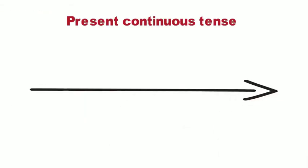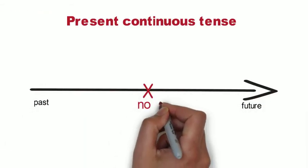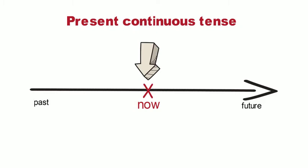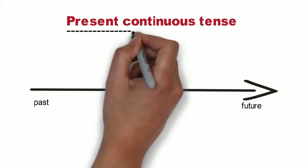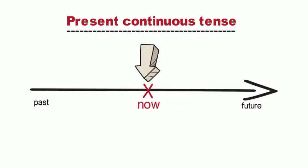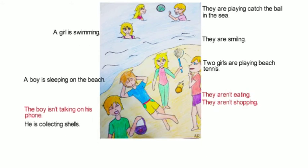When we want to talk about what someone or something is doing right now at the time of speaking, we use the present continuous tense. All of these sentences tell us what the children are doing now. They all use the present continuous tense.